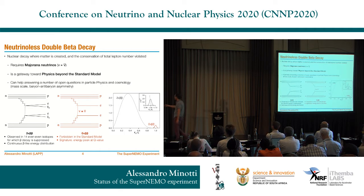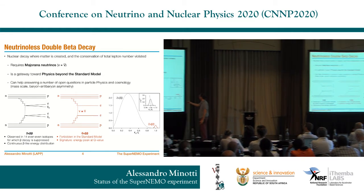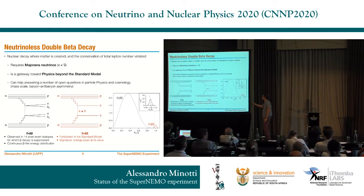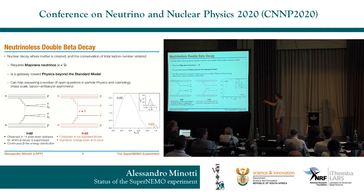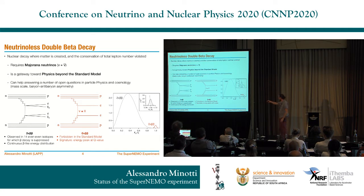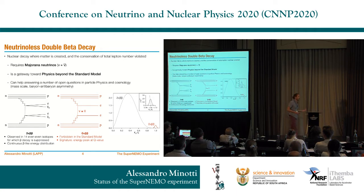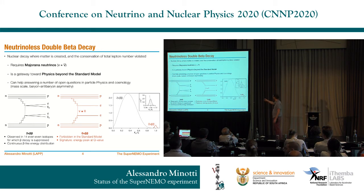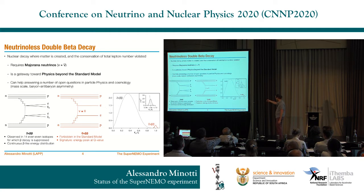In principle, you start with two-neutrino double beta decay — two beta decays at the same time where two anti-neutrinos and two electrons are produced — and replace it with a Majorana neutrino exchange in the Feynman diagram. One of the simplest possibilities is an exchange of a Majorana neutrino, and the final state contains only electrons. This is why matter is created in this interaction. The signature of two-neutrino double beta decay is a continuous spectrum similar to single beta decay, while the neutrinoless signal is a peak at the Q-value of the interaction.